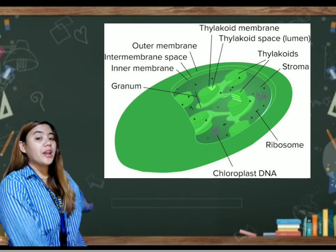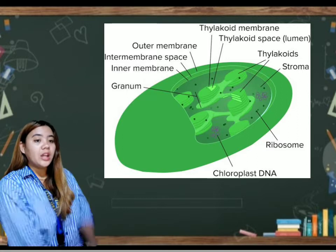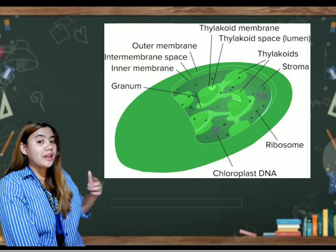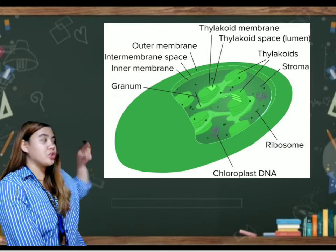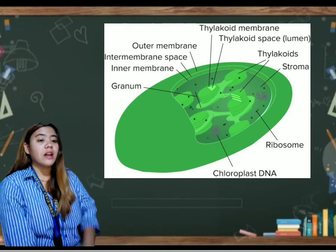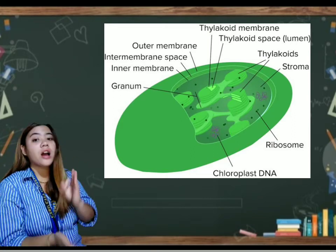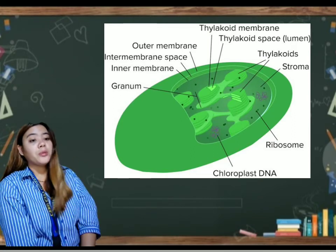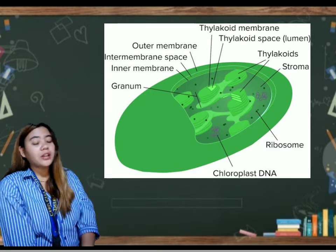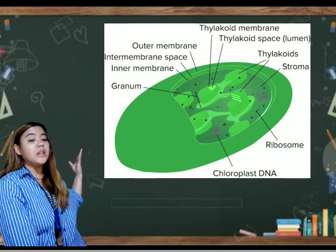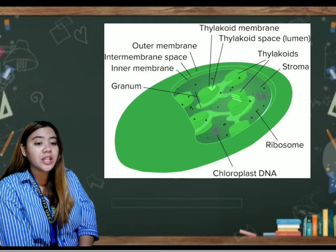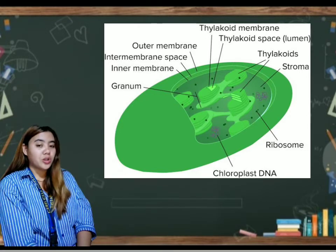So, class, the thylakoids are stacked on top of each other in columns known as grana. In between the grana is the stroma. As you can see in the picture, that's the stroma. The stroma contains enzymes, molecules, and ions where sugar formation takes place. Ultimately, light energy must be transferred to a pigment-protein complex that can convert it to chemical energy in the form of electrons.